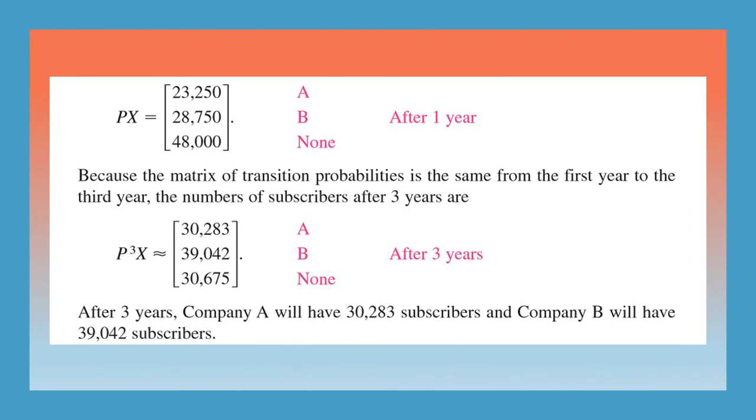So since PX is already given, since the matrix transition probability is the same for the first year to the third year, we can find after three years, we have to have P raised to 3X. After two years, it will be P squared X. After three years, it is P cubed X in this case.